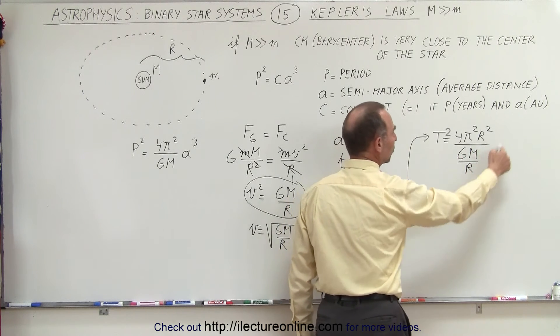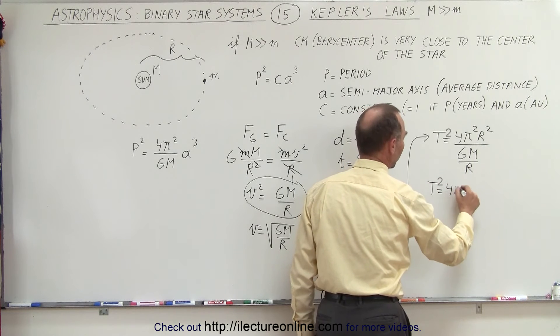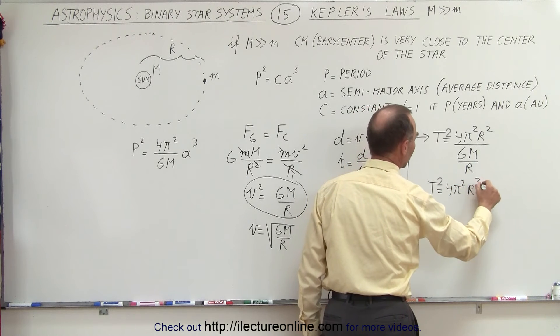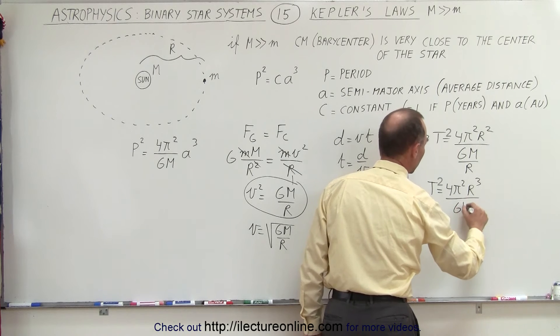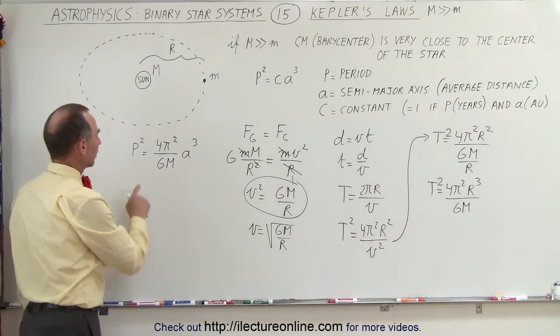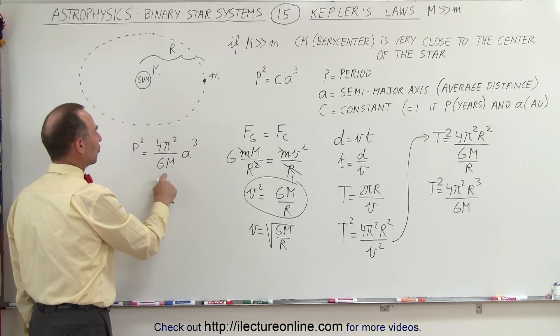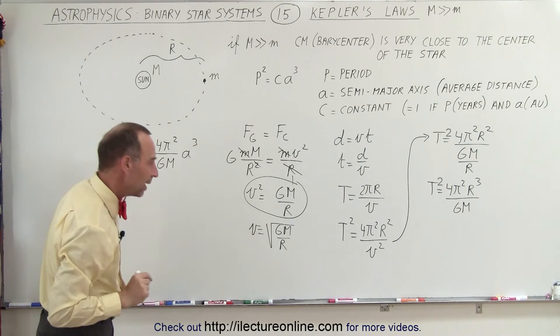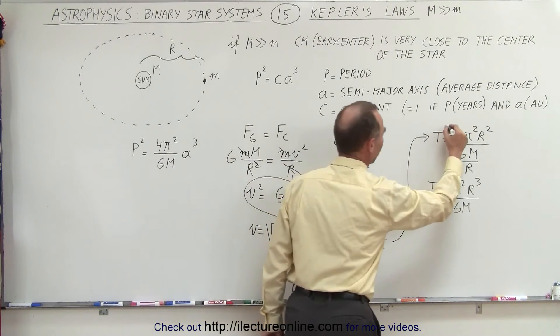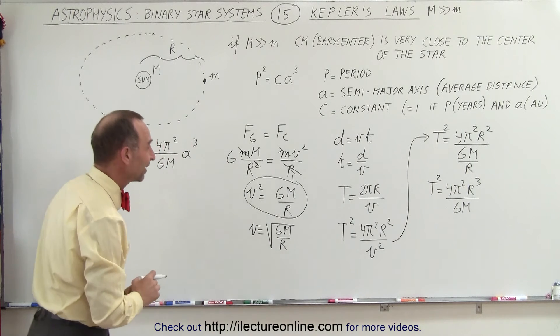And this r can then move to the numerator. So we have the period squared is equal to 4π²r³ divided by GM. Now, let's go over here. Now, we realize that P² is equal to 4π²/(GM) times a³. And let's see here. I think I dropped my period squared. Can't do that, otherwise things won't work out. Okay, there we go.